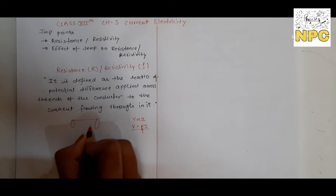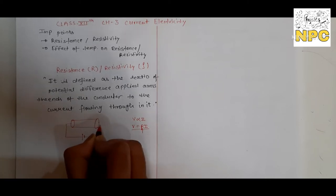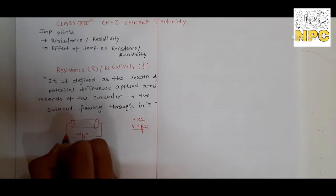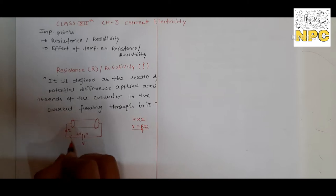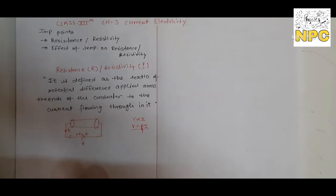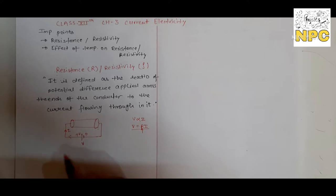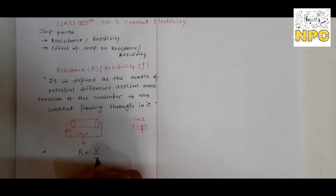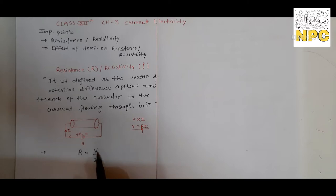Suppose we have a conductor connected to a battery, and the battery provides a potential difference. This is the higher potential side and this is the lower potential side, and in this way current is flowing. Suppose current I is flowing through this conductor. The potential difference provided by the battery causes the current to flow. So R is defined as the ratio of potential difference to current: R is equal to V by I.